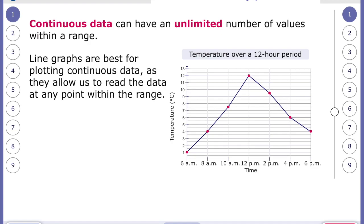Line graphs are best for plotting continuous data as they allow us to read the data at any point within the range. So if you look here at this graph you can see at 6am it was 1 degree and then when they measured again at 8am it was 4 degrees. And we can make a sensible guess that the temperature rose like this. So at 7am halfway between 6 and 8 you can read up and have an estimate that the temperature, even though they didn't measure it, would have been around 2.5 degrees.